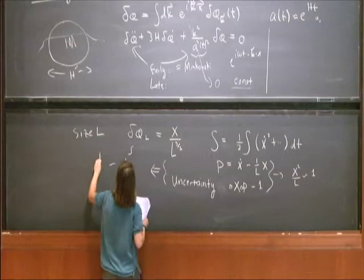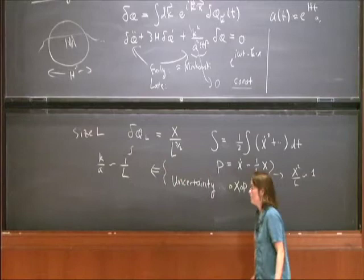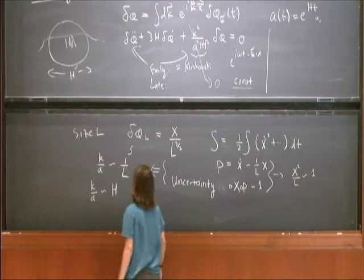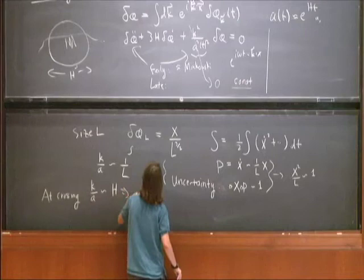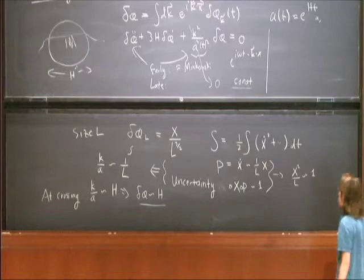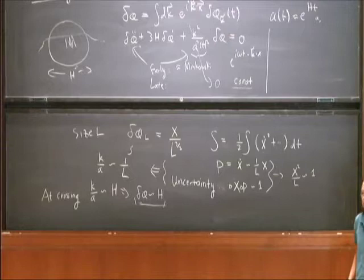The physical momentum scale is k over A in this problem. When the two behaviors cross over — when k over A is of order Hubble — that's the crossover between the early and late times in this equation. At horizon crossing, delta phi is of order Hubble. This shows that the physical effect is zero-point energy fluctuations. The result of the expansion is that this amplitude persists as a constant solution to the equations of motion through the rest of inflation.